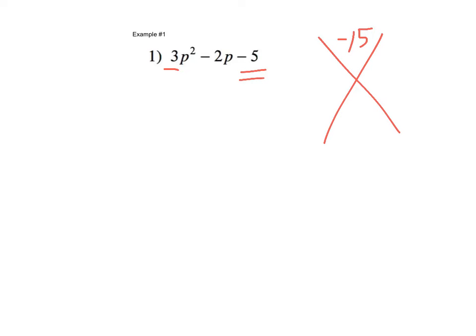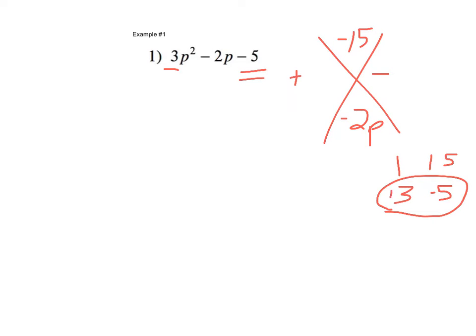So, I have to multiply to negative fifteen and I have to add to the middle term of negative two p. If you have to multiply to a negative, you need one positive and one negative. So, what are factors of fifteen? One and fifteen, three and five. Which ones are going to make two? Three and five. And we need one of each sign, so it's going to be negative five and positive three.